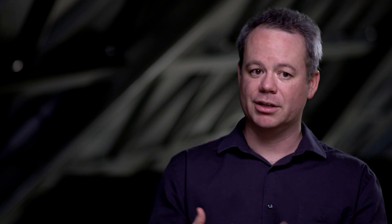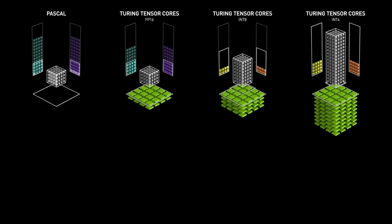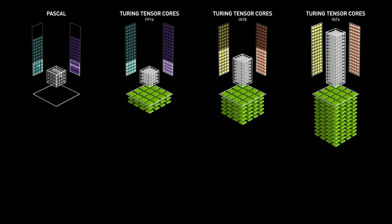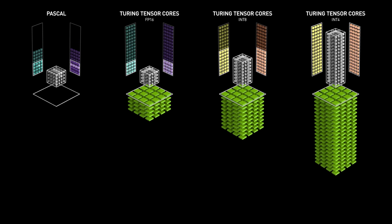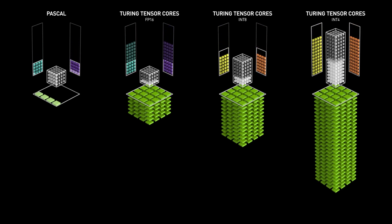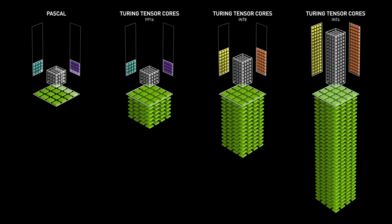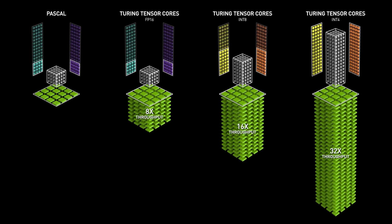What TensorCore really does is it performs a matrix multiply-accumulate. Matrix multiplies are the basis of the really heavy workloads in deep learning. TensorCore takes in 16-bit floating point, does the matrix multiply, and then accumulates everything in 32-bit. That 32-bit precision accumulation really matters for convergence of networks — it's what makes mixed precision work.